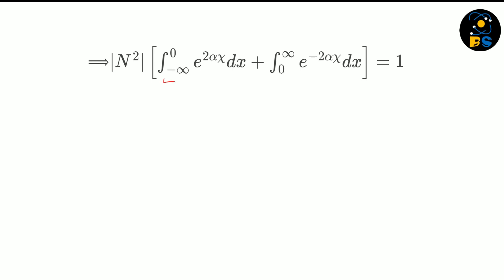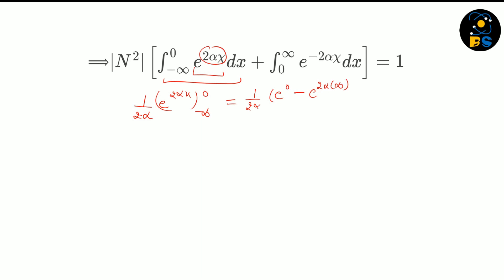To solve the first integral from minus infinity to zero, we differentiate: the result is 1 over 2 alpha times e raised to the power 2 alpha x, evaluated from minus infinity to zero. Putting in the limits, we get 1 over 2 alpha times e raised to 0 (which equals 1) minus e raised to 2 alpha times minus infinity. Since e raised to minus infinity equals zero, this term vanishes, and the value of the first integral is 1 over 2 alpha.